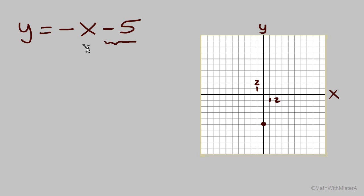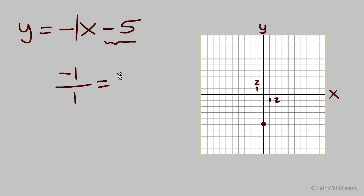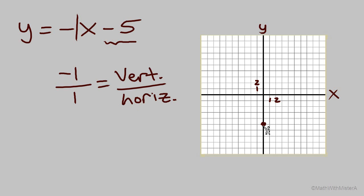Now what is our slope for this equation? It's always the coefficient of the variable x. In this case it's negative 1. So as a fraction, we can write negative 1 over 1. Remember, the numerator is our vertical change and the denominator is the horizontal change. So from our y-intercept, vertically negative 1 means to go down 1, and then a positive 1 horizontal change to the right 1. And there's another point on the line — down 1, to the right 1.